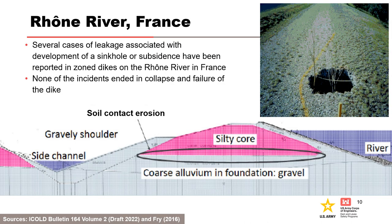Several cases of leakage associated with the development of a sinkhole or subsidence have been reported in zoned dikes on the River Rhone in France. The dikes are clay-silt embankments with gravel layers on the upstream and downstream slopes, often on gravel foundations. Soil contact erosion occurs when high river levels cause high velocities in the gravel foundation, leading to initiation of soil contact erosion at the clay-silt fill and gravel interface. Soil contact erosion may be interrupted if the water level and Darcy velocity are not high enough to sustain continuous erosion. Sinkholes are likely due to the migration of fine soils to replenish the eroded material from intermittent soil contact erosion events. None of these incidents ended in collapse and failure of the dike, and diaphragm walls were installed through the embankments into the gravel foundation to reduce flow velocities in the gravel below critical values at the clay-silt fill and gravel interface.